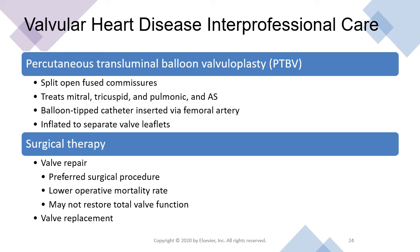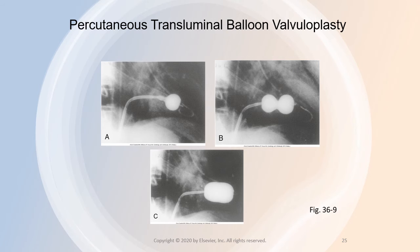An alternative treatment for some patients is percutaneous transluminal balloon valvuloplasty, referred to as PTBV. During a PTBV, the fused commissures are split open. Balloon valvuloplasty treats mitral, tricuspid, pulmonic, and aortic stenosis. The PTBV procedure is done in the heart catheterization laboratory. It involves threading a balloon-tipped catheter from the femoral artery or vein to the stenotic valve, and the balloon is inflated to separate the valve leaflets. A single or double balloon technique may be used; the single balloon with an hourglass shape allows sequential inflation and is popular because it is easy with good results and few complications.